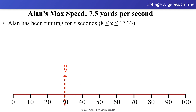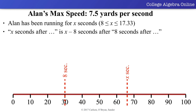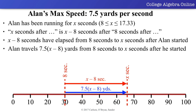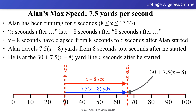If Allen has been running for x seconds, where x is any number between 8 and 17.33, we can determine what yard line Allen is at. Notice that x seconds after Allen started running is x minus 8 seconds after 8 seconds after Allen started running. So x minus 8 seconds have elapsed from 8 seconds to x seconds after Allen started running. In these x minus 8 seconds, Allen travels 7.5 times x minus 8 yards. Since Allen is at the 30 yard line 8 seconds after he started running, he is at the 30 plus 7.5 times x minus 8 yard line, x seconds after he started running.